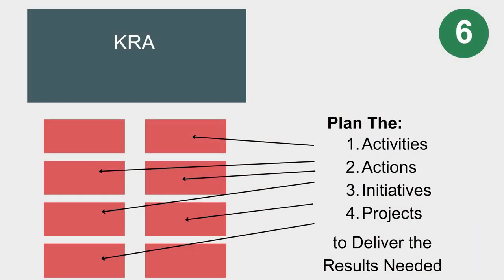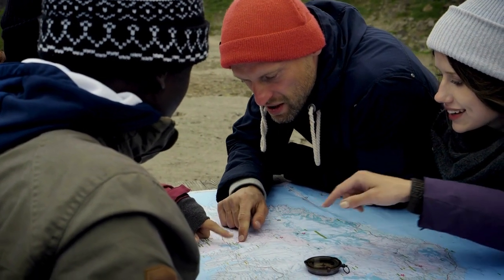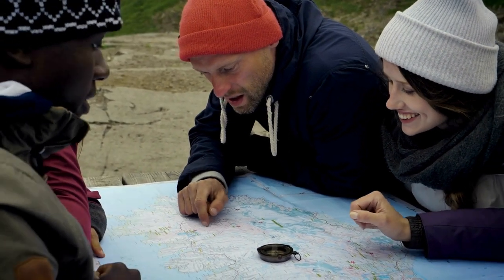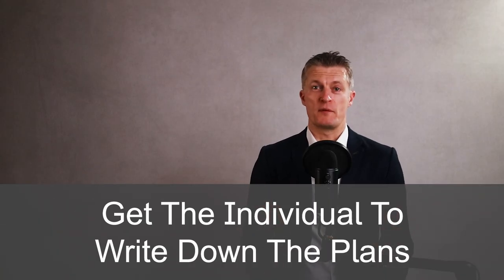And sixth — the most important — focus on planning the activities, actions, initiatives and projects the employee will have to undertake on their own or with colleagues so they can deliver the results set out in their KRAs. This is a super important stage. If you have a map and a compass, you are far more likely to arrive at your destination on time than if you don't have either. Get the individual to write down the plans agreed upon. Using KRAs in this format is so much more useful than a traditional job description and it is also quicker and easier to keep up to date.